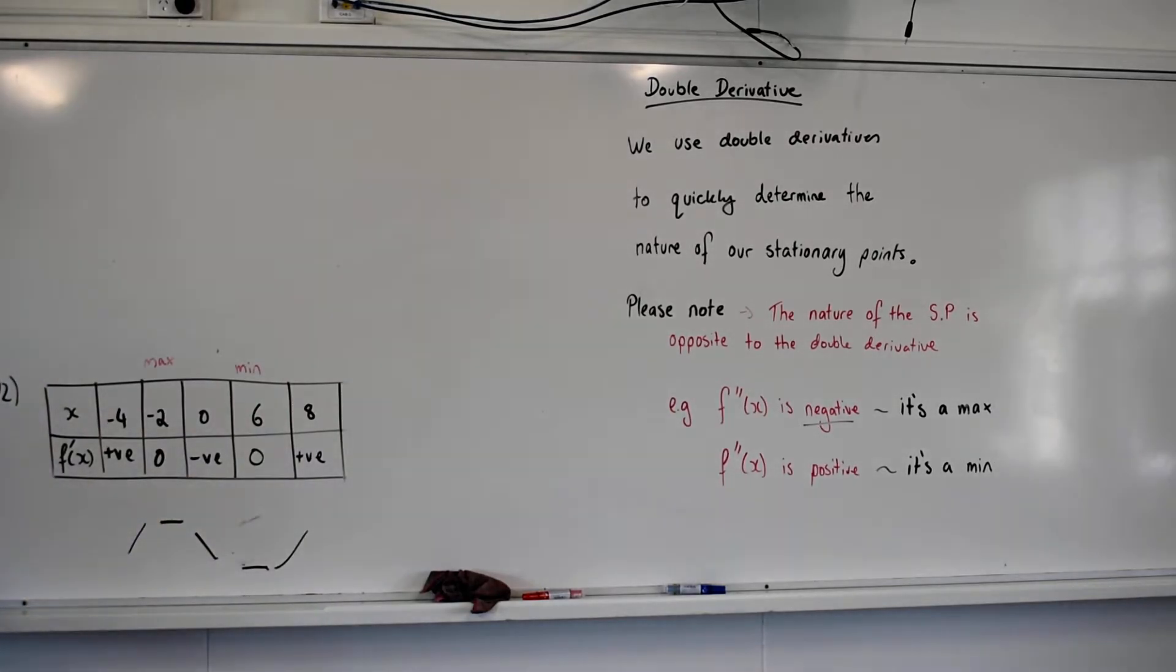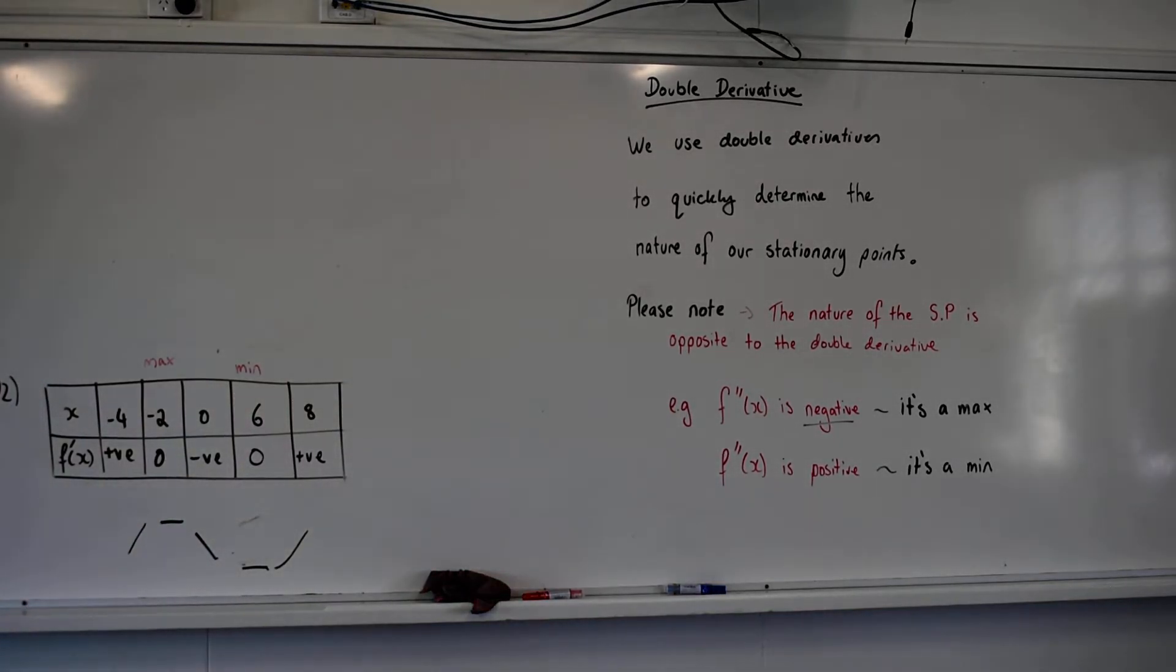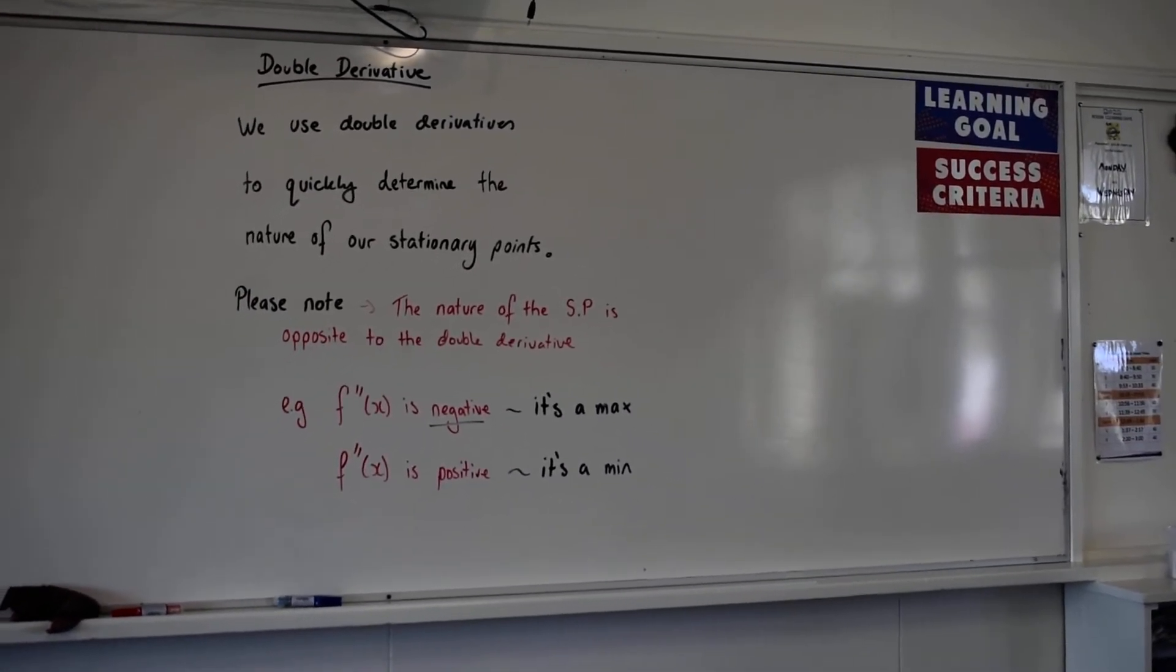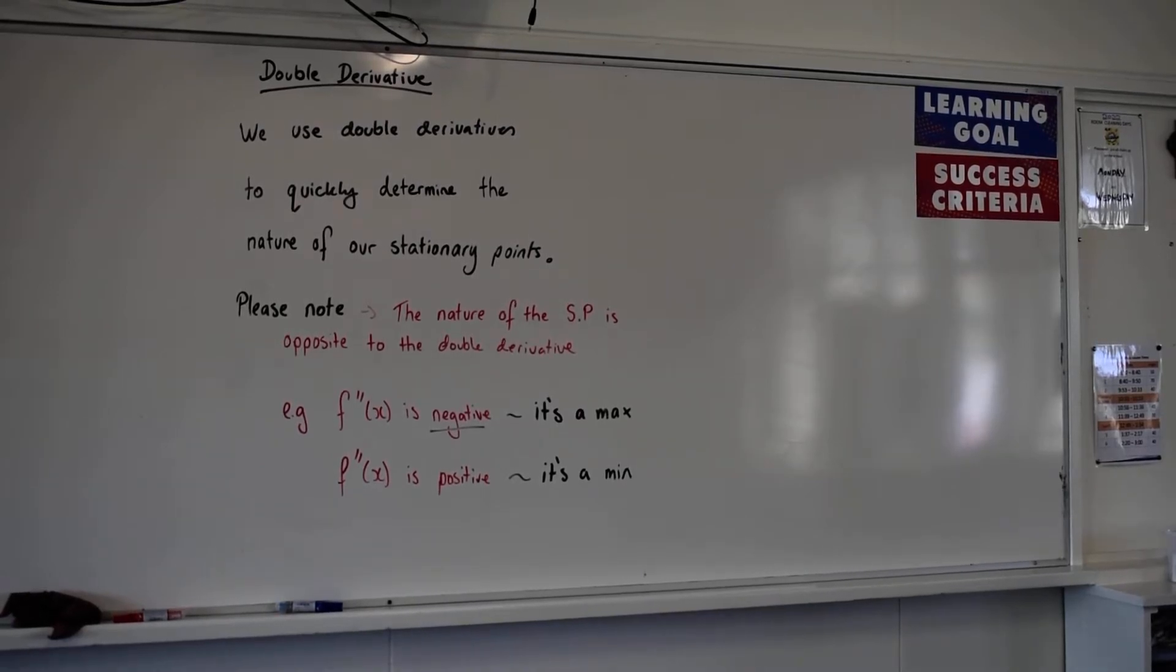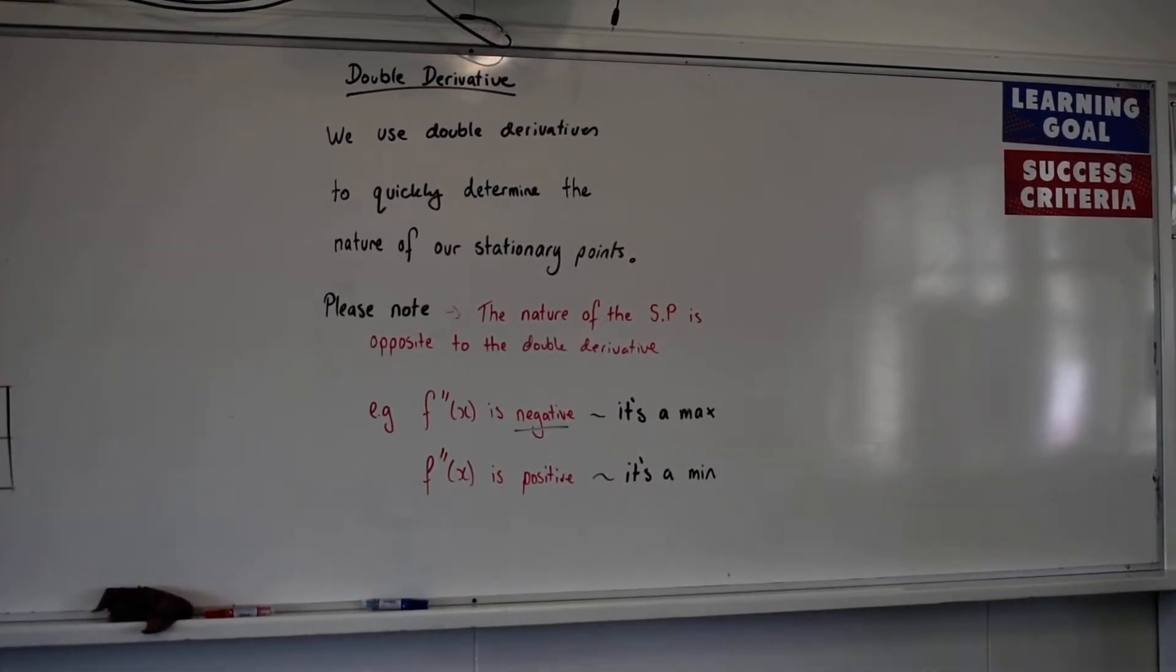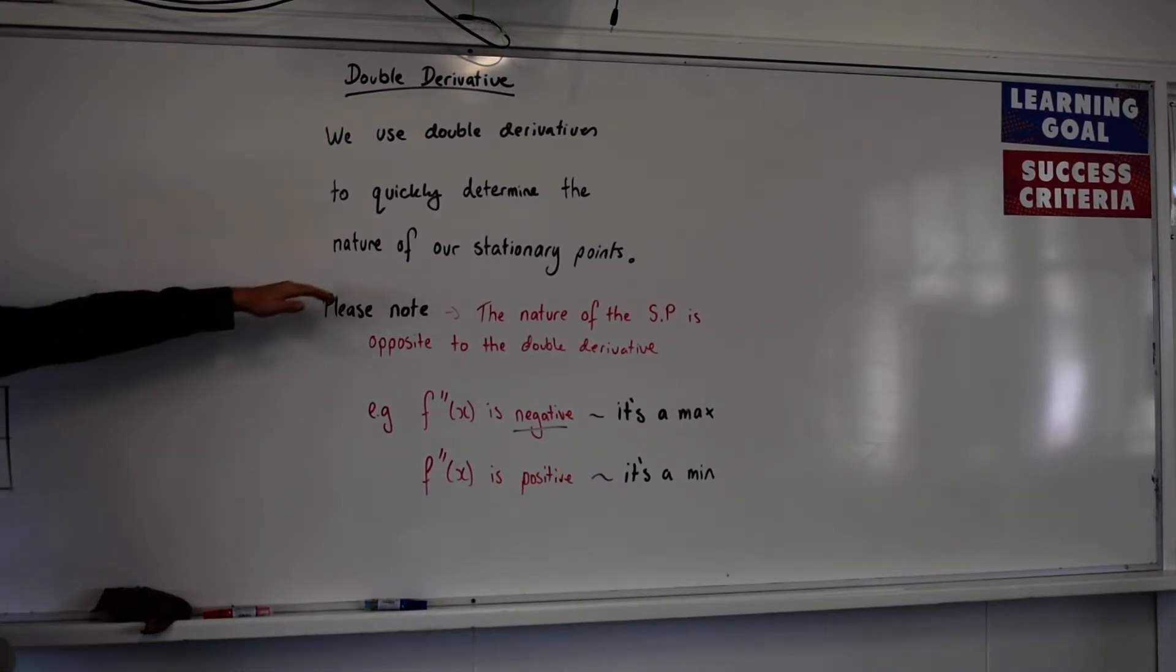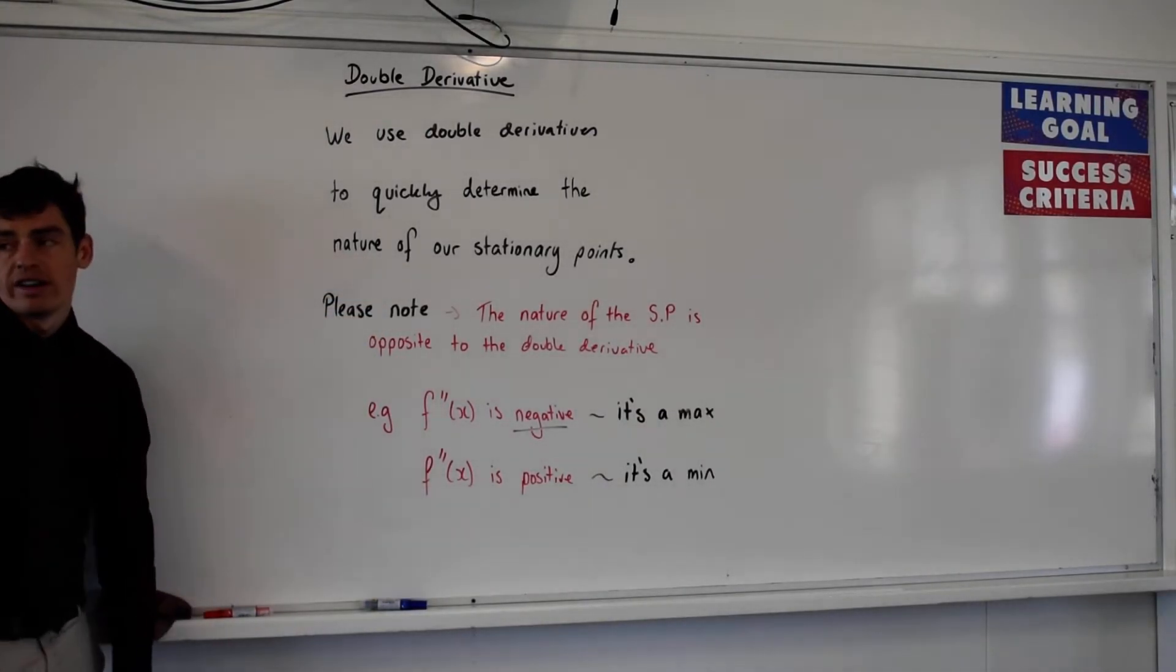So what we're going to look at now is double derivatives, because this provides a shortcut. That means you can always use your tables, but this is a quicker way of determining whether we are dealing with a max or a min, which is important with curve sketching. Now, we use double derivatives because they're quick, but again, shortcuts for those who know the way, they allow us to determine the nature, nature just means are we dealing with a max or a min of our stationary points.